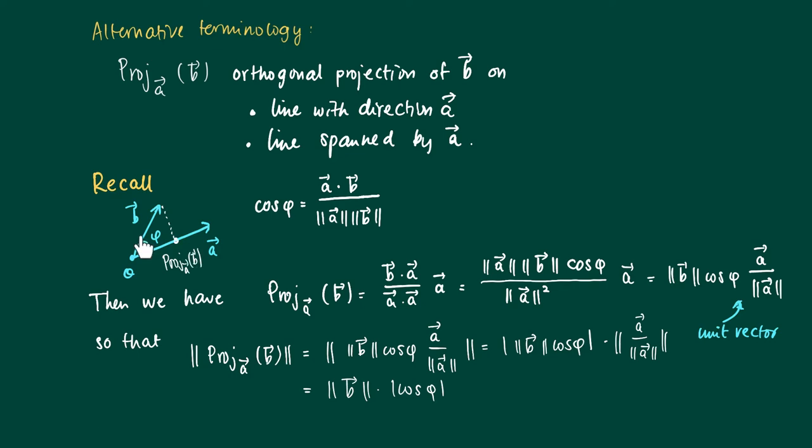So here we see the vector B and its projection, and you already see that its length is shortened. The basic observation is that if you project a vector on another one, its length will be smaller in general, depending on the value, the absolute value of cosine of phi.